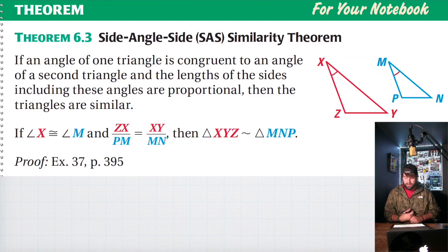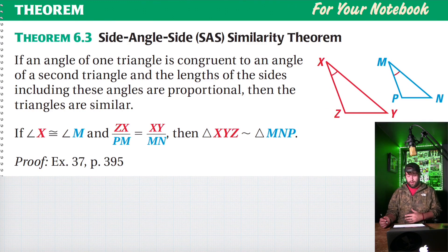Theorem 6.3, side angle side similarity theorem. If an angle of one triangle is congruent to an angle of a second triangle, and the lengths of the sides including these angles are proportional, then the triangles are similar. So if X is congruent to M, and ZX over PM is proportional to XY over MN, then you could say those two triangles are similar.